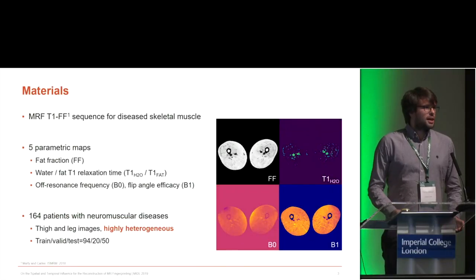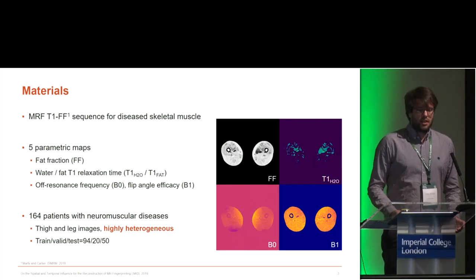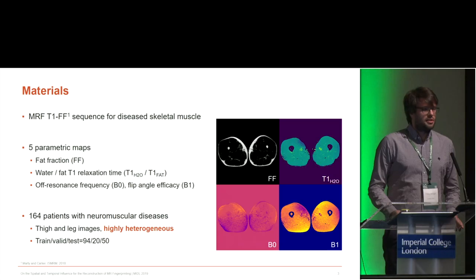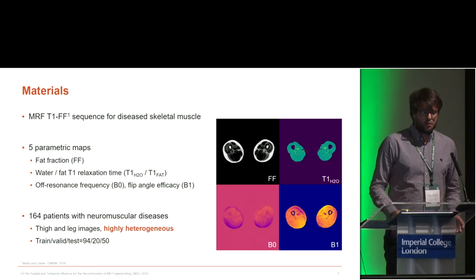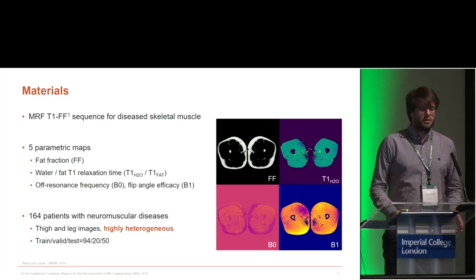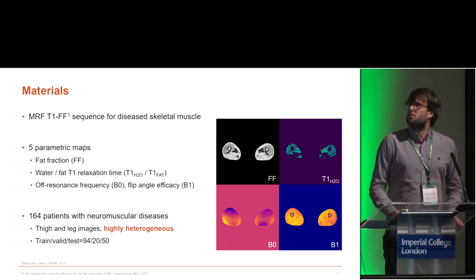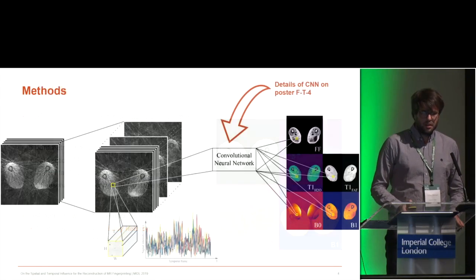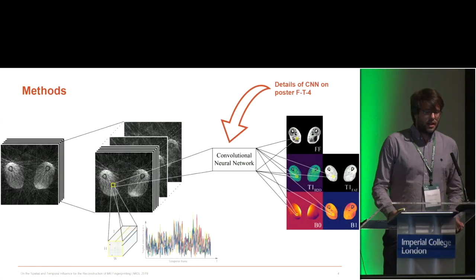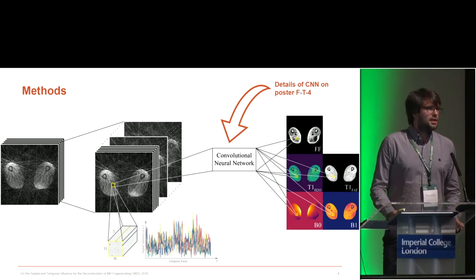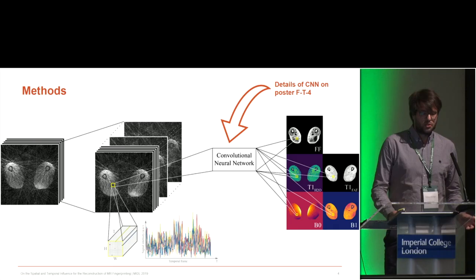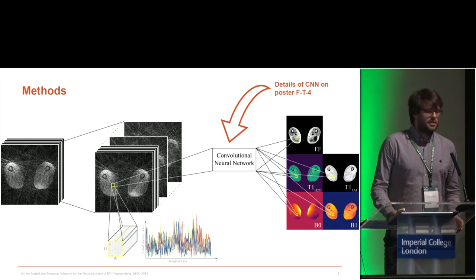We used an MRF sequence to image diseased skeletal muscles with five parametric maps, and we have a dataset of 164 patients which is highly heterogeneous. Our method relies on a 2D CNN which reconstructs the parametric maps patchwise — we input a patch of fingerprints and predict the parametric maps at that location.